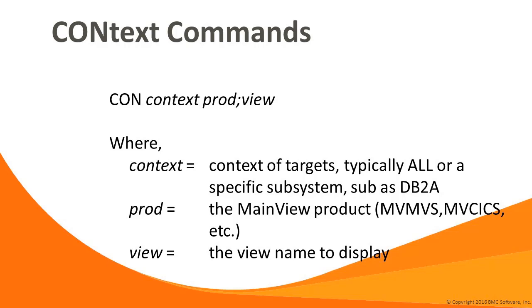More advanced users will use the context command to quickly shift between MainView monitors. To do so, specify the con command with the context, product, and view. For example, to display a view C-region in MainView for KICKS and display all targets, you would issue con all MV kicks semicolon C-region. Or, if I'm in MainView for KICKS already looking at C-region with the context of KICKS1, I can quickly change it to KICKS4 by issuing con kicks4.